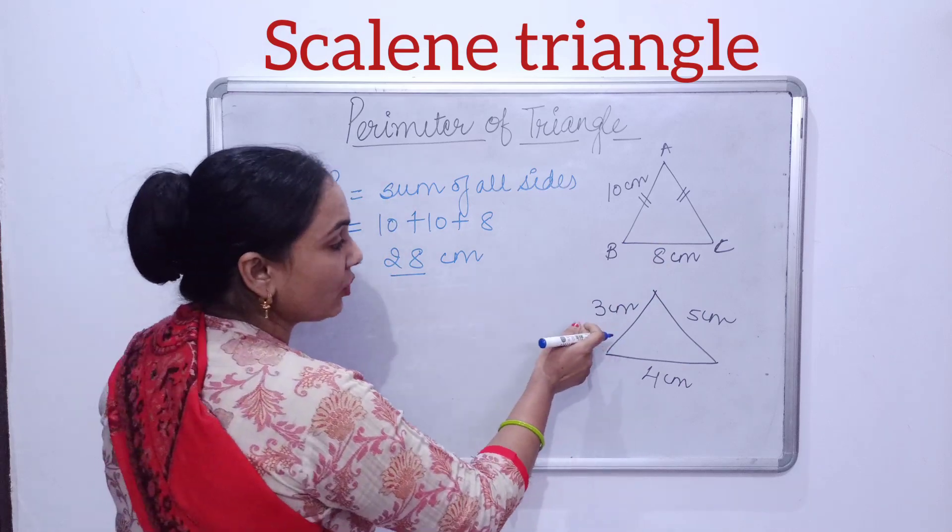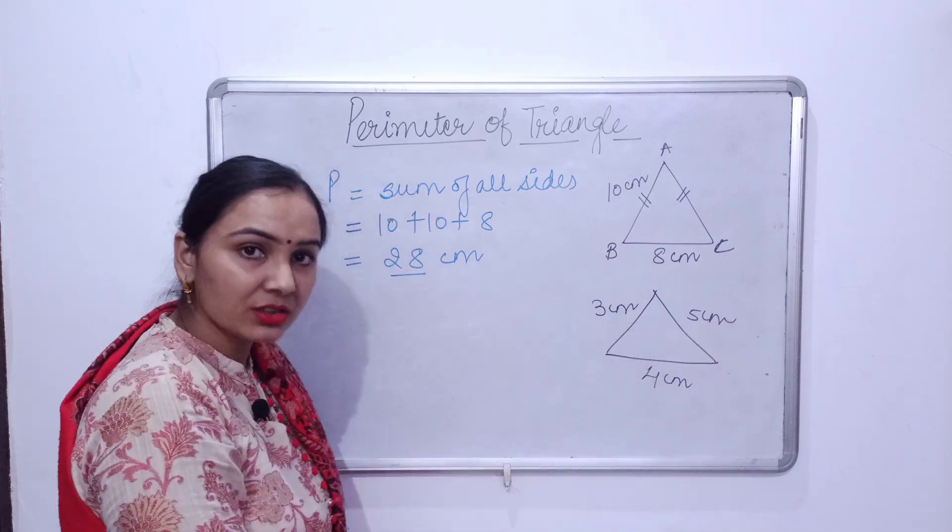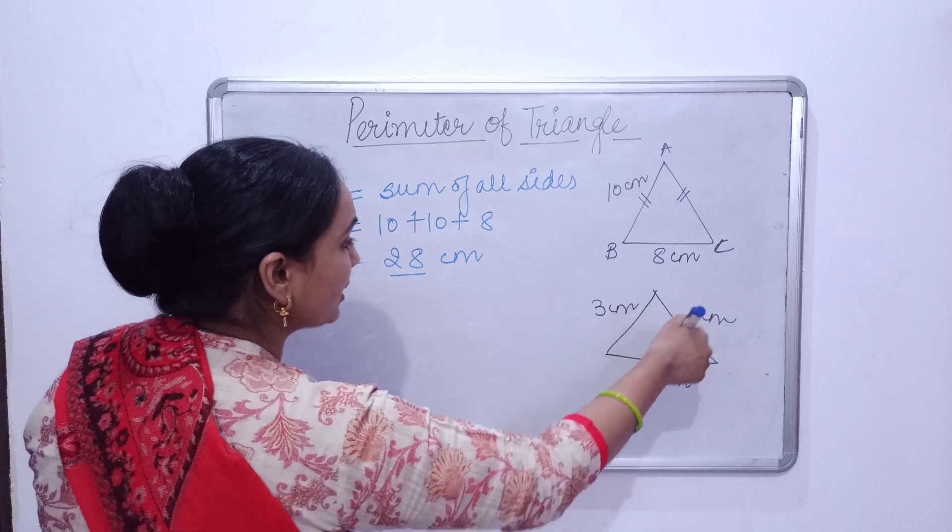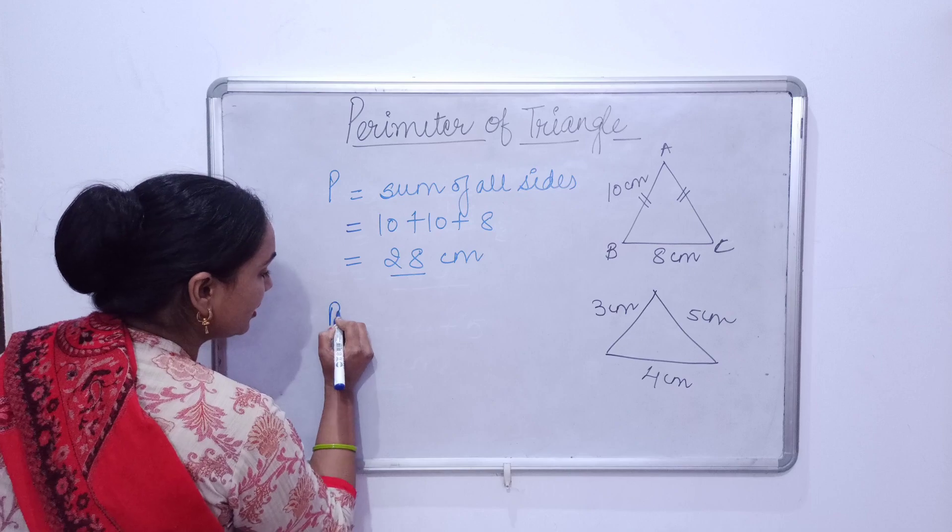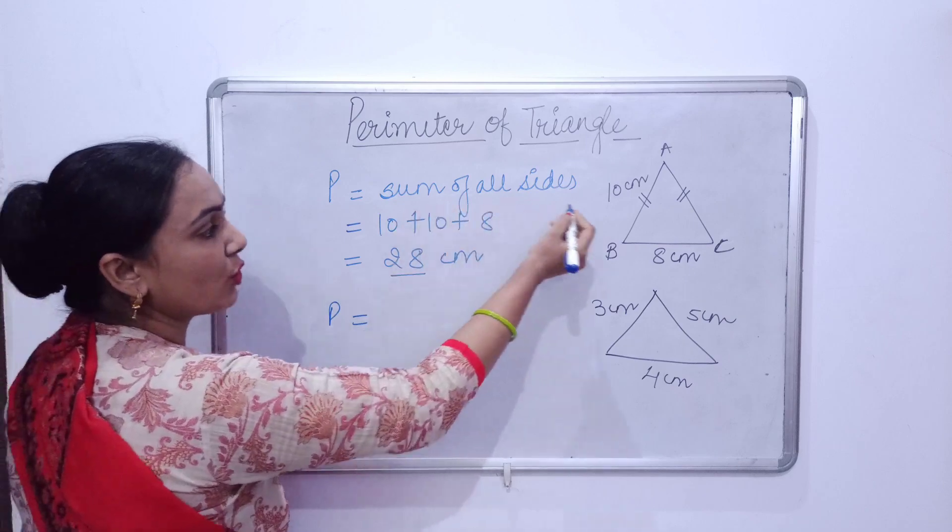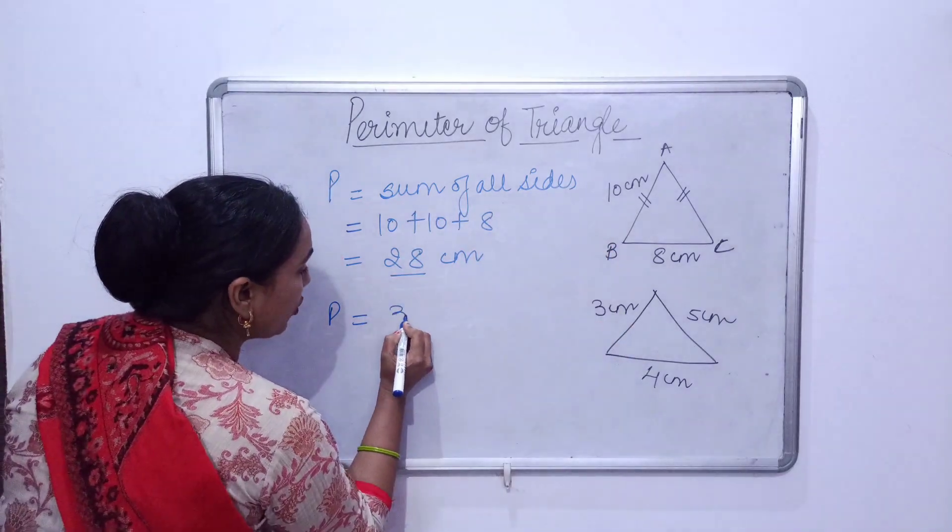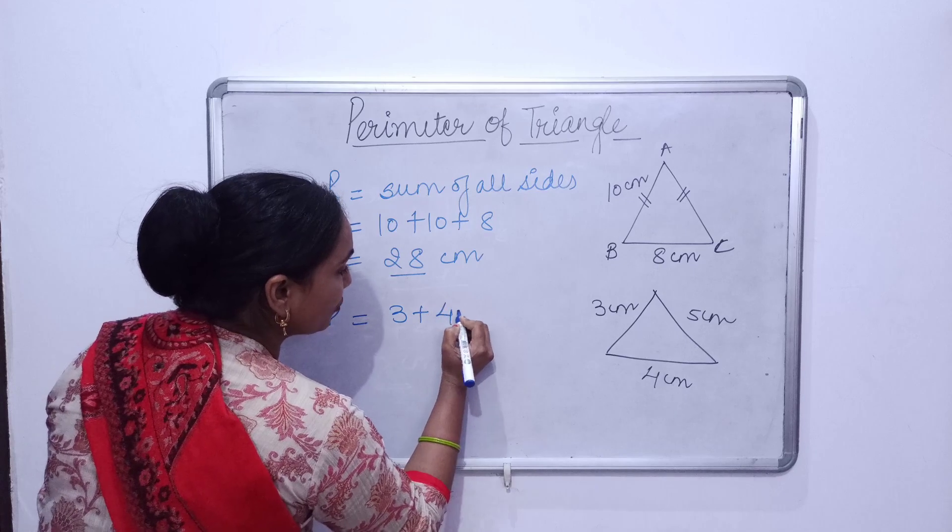For scalene triangle, we have a scalene triangle here having all the three sides different. In this also, the same formula will be applied as P is equal to sum of all sides.